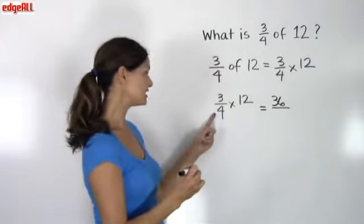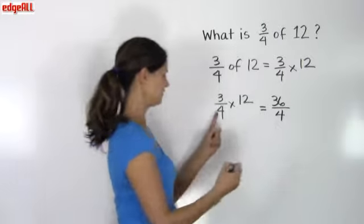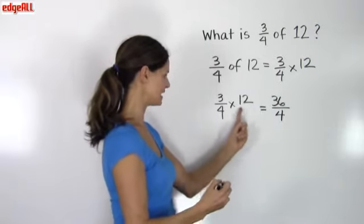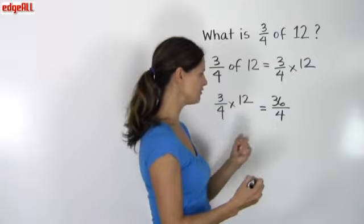And what I do is I multiply the numerator times my whole number, and I get 36. And then I divide by the denominator, or 4.